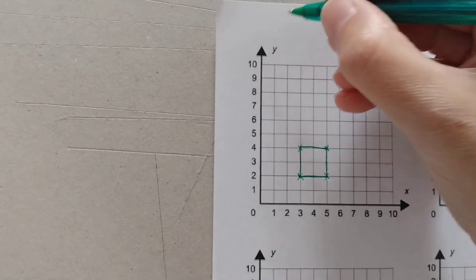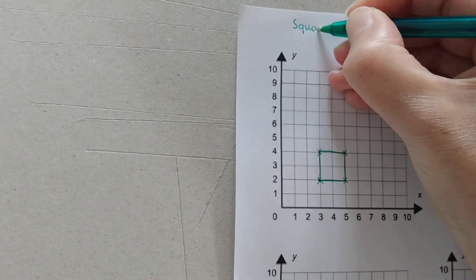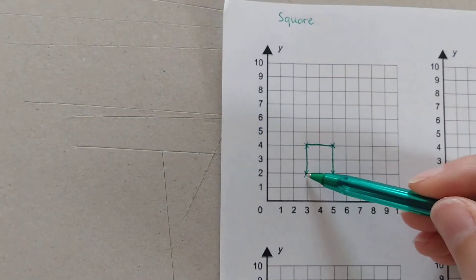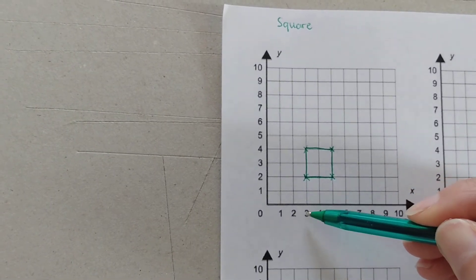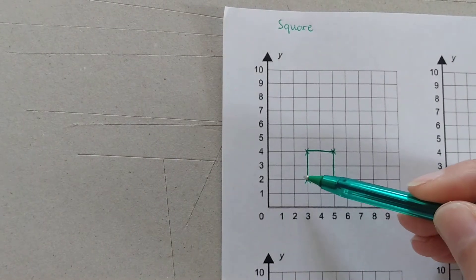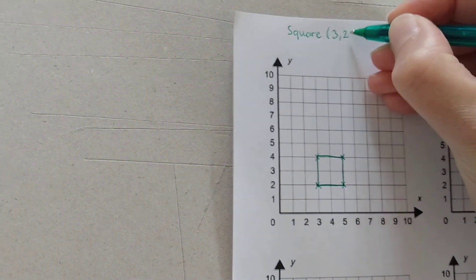Now I need to make a note of those coordinates. So my square is what? Remind me what coordinates I've used. What point is this one on? And we look to the x-axis before the y-axis. So it was 3, 2.